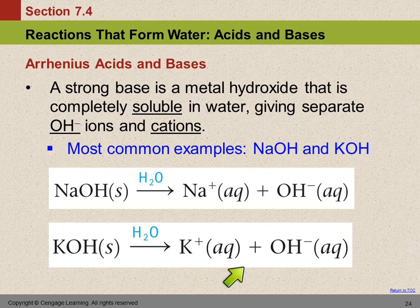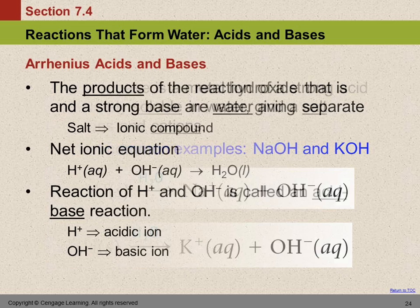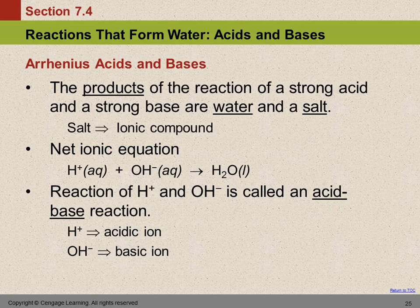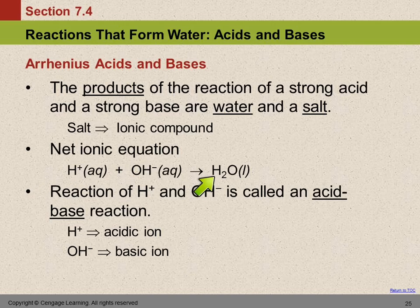Potassium hydroxide dissolves completely in water and dissociates into potassium ions and hydroxide ions. What we're going to call bases are like these — a metal and hydroxide. So if you see a metal hydroxide, that's a base. When we mix an acid and a base, the products are going to be water and a salt. In chemistry, the word salt just means any ionic compound — in everyday life, salt means sodium chloride, but in chemistry, salt refers to any ionic compound. So you mix an acid and a base, you get salt and water.